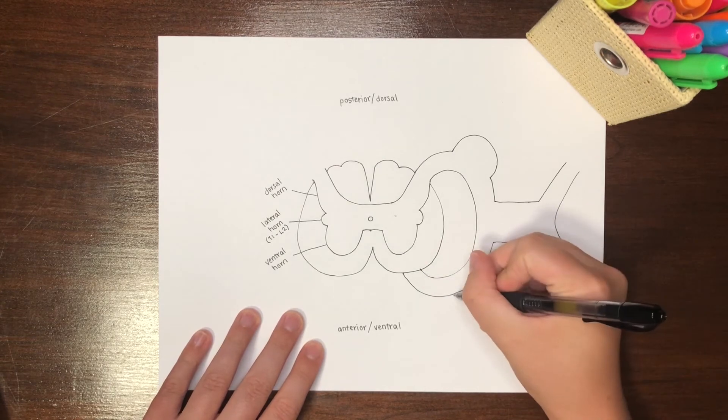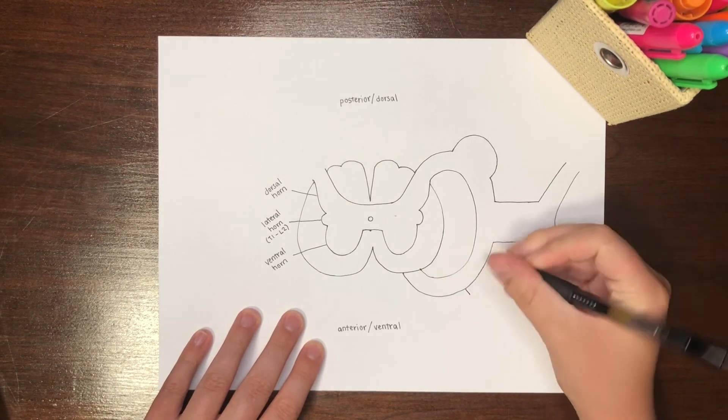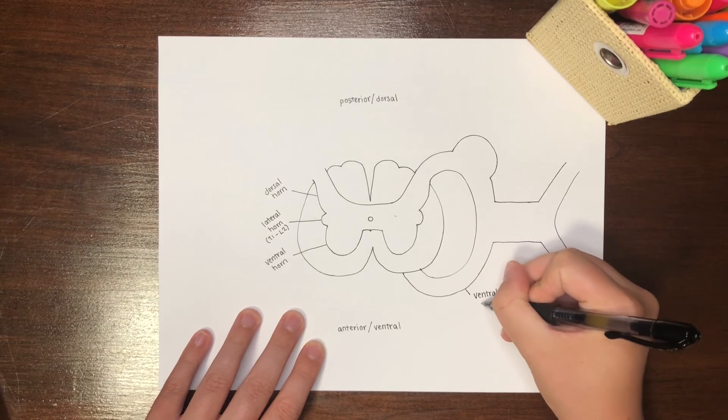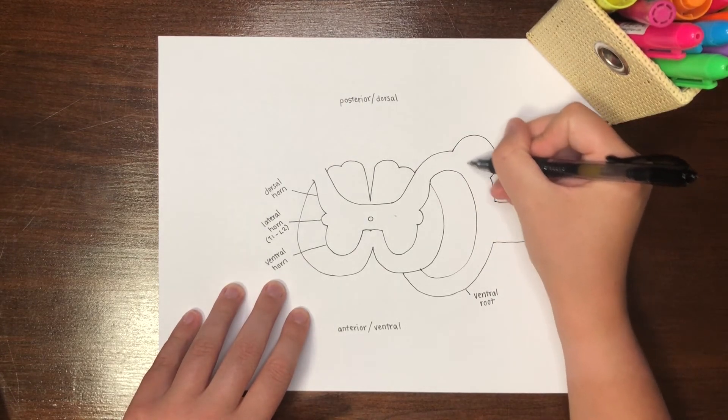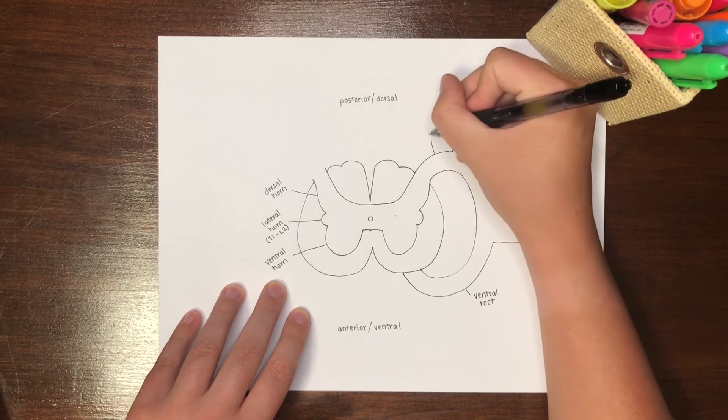The nerve leaving the anterior portion of the spinal cord is called the ventral root. The nerve posteriorly that is continuous with the dorsal horn is called the dorsal root.